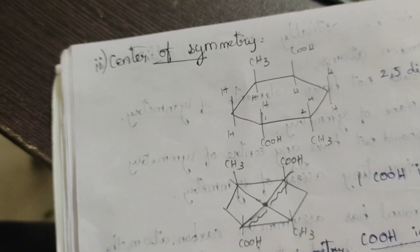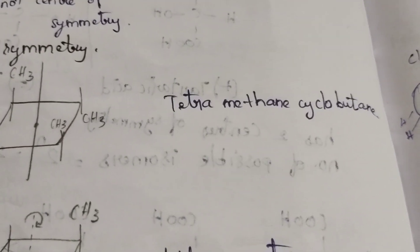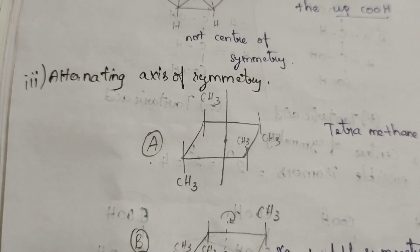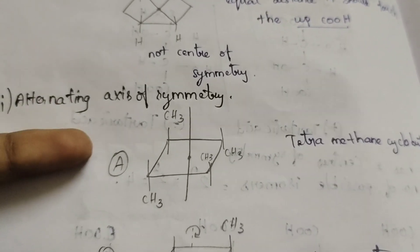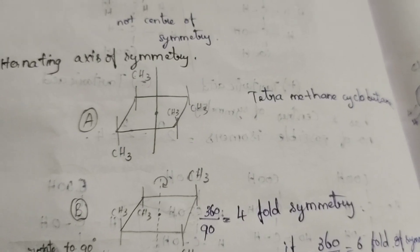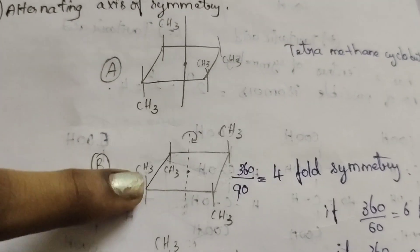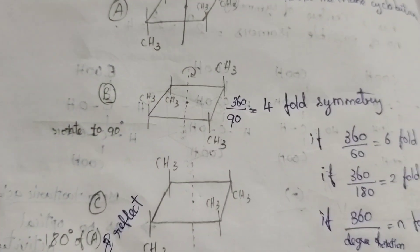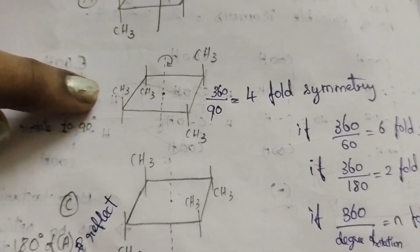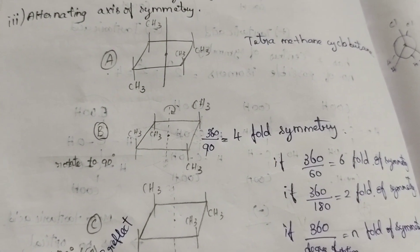Next, alternating axis of symmetry. Here is the example: tetramethylcyclobutane. If we pass through the structure, we rotate it by an angle and then reflect it — and again we get the same structure. That is the alternating axis of symmetry. If we rotate the CH3 groups and then reflect, we get back to the first structure. That is the alternating axis of symmetry.